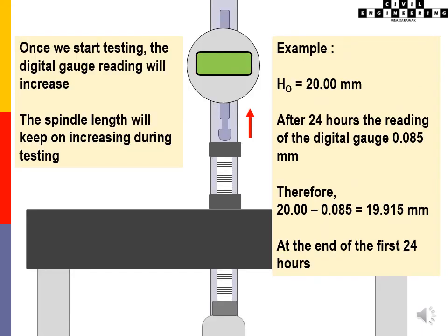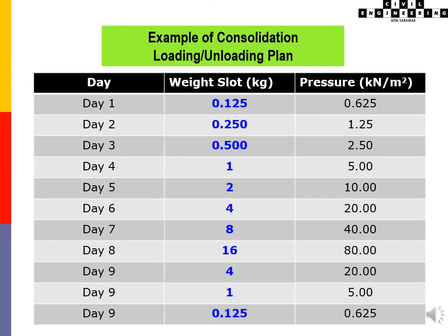The gauge reading will increase during testing. The spindle length will keep on increasing during the test. Example of the consolidation loading unloading.